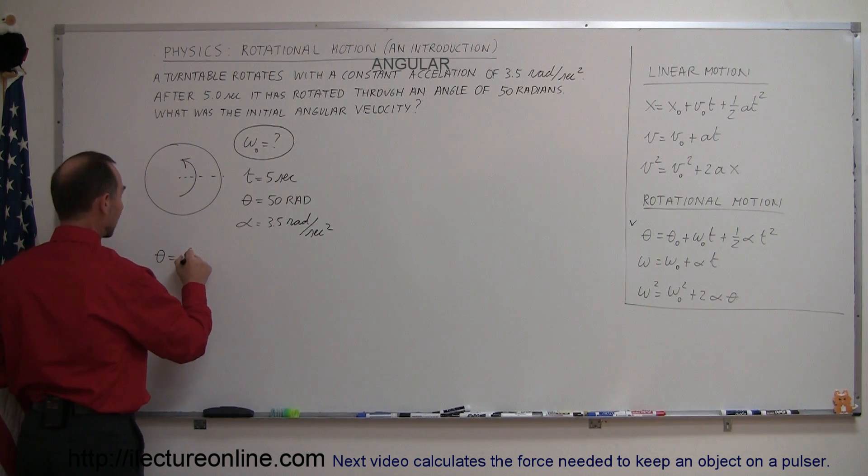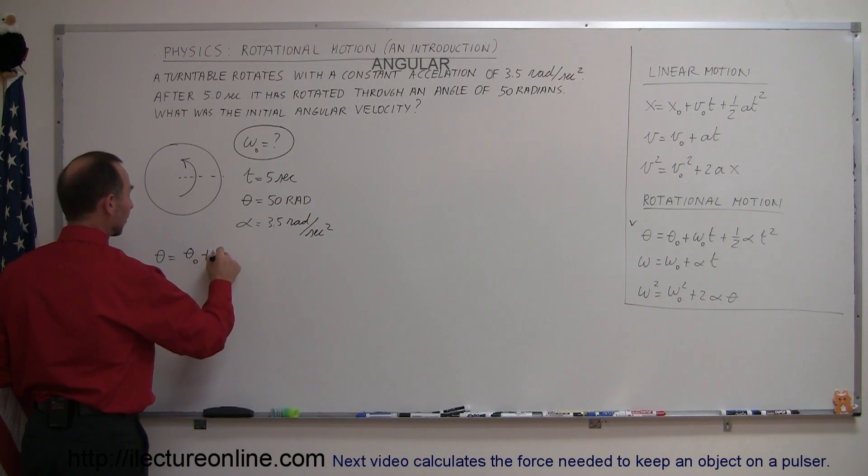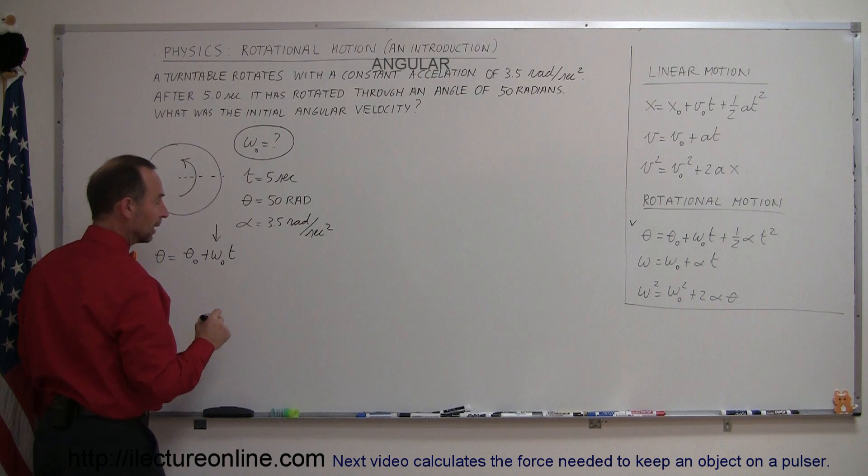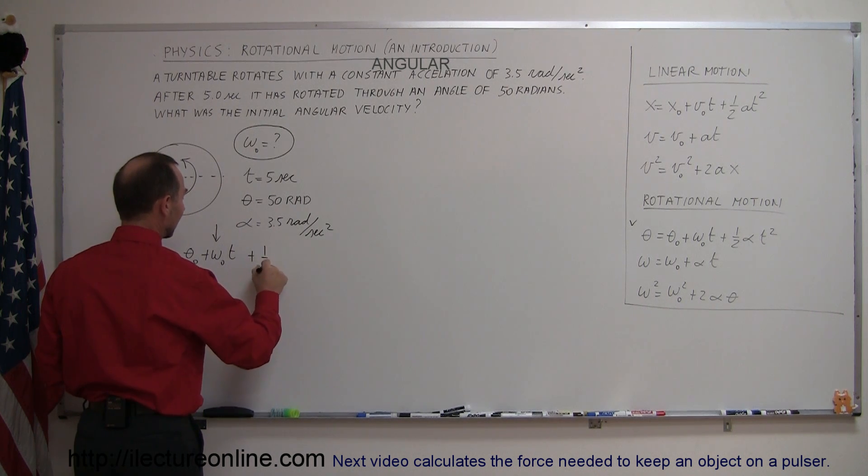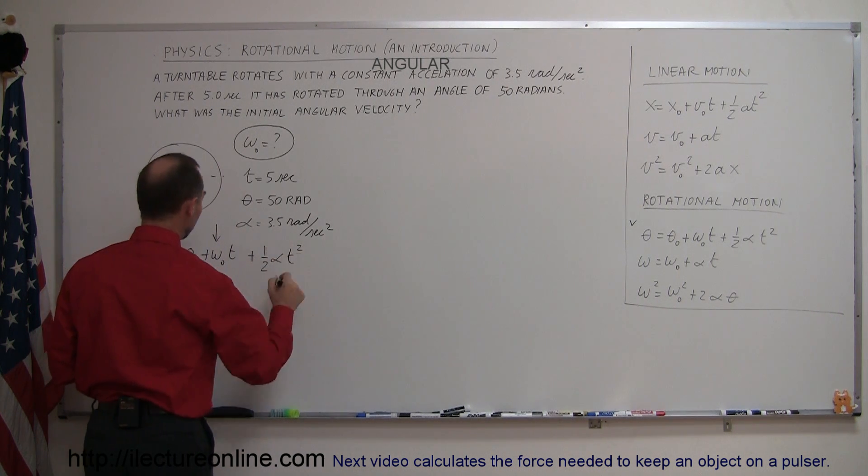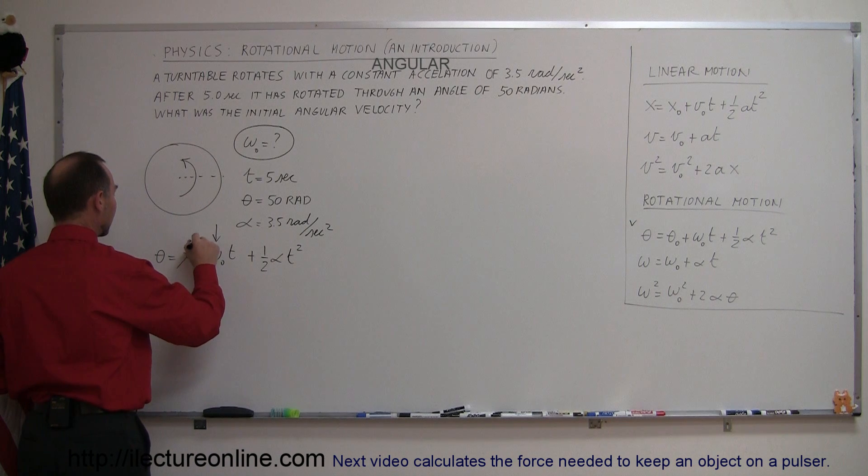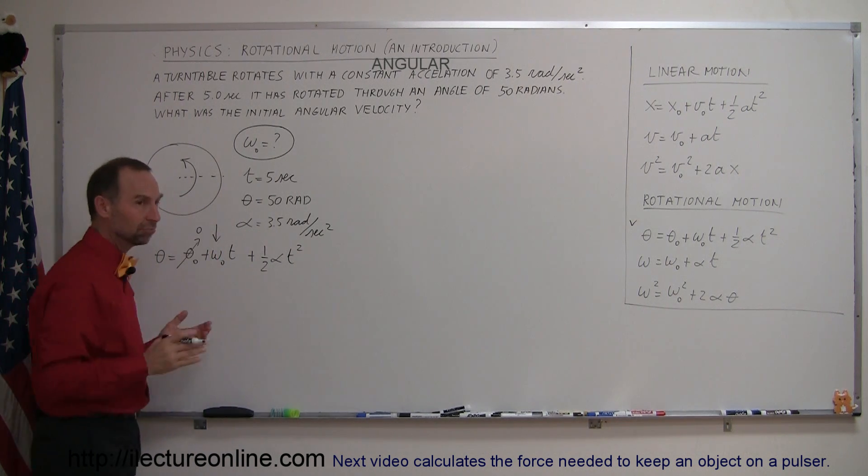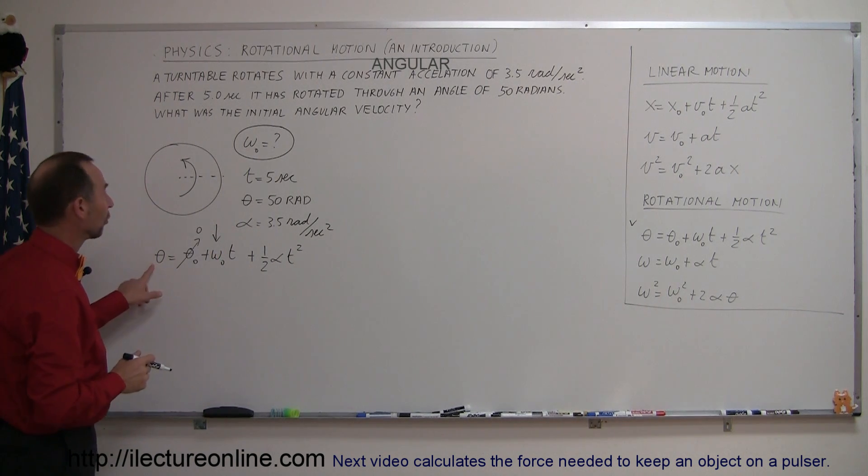So we have theta equals theta sub naught plus omega sub naught times t - this is the variable we're looking for - plus one-half alpha t squared. And assuming that we start from theta equals zero, we can do that, and this is a total distance covered, 50 radians. I think we're in good shape. Let's now put some numbers in there.